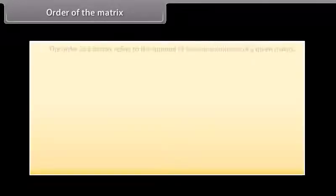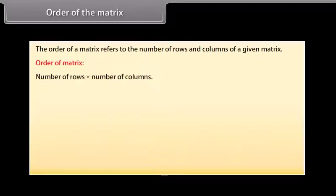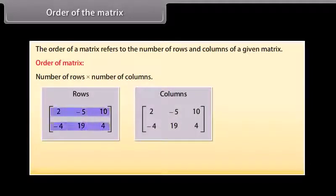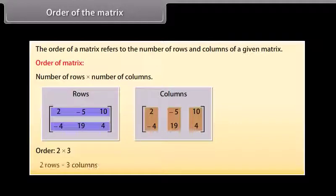The order of a matrix refers to the number of rows and columns of a given matrix. By convention, the order of a matrix is given by number of rows by number of columns. The order of this matrix is 2 by 3, that is 2 rows by 3 columns.